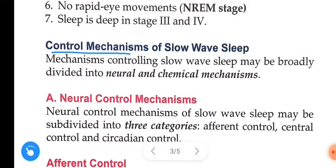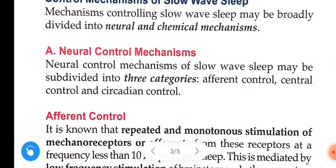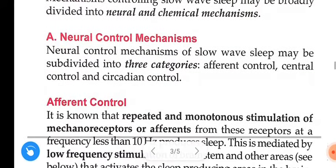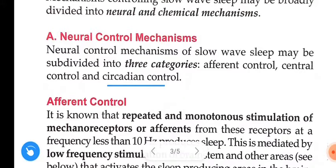Control mechanism of slow wave sleep: the mechanism controlling slow wave sleep may be broadly classified into neural and chemical mechanisms. Neural control mechanism may be subdivided into three categories: afferent control, central control, and circadian control.